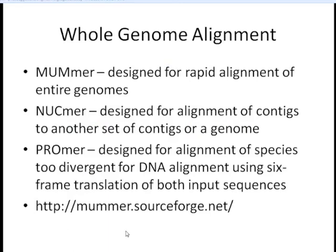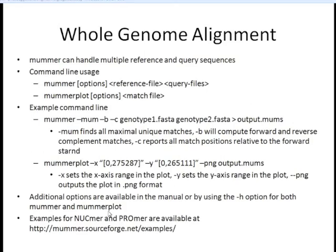Another specialized scenario is aligning a whole genome to another whole genome. For this, we have three possible programs within the MUMmer suite. MUMmer itself is designed for rapid alignment of entire genomes. NUCmer is designed for alignment of contigs to another set of contigs or a whole genome. PROmer aligns at the protein level using six-frame translation, ideal for aligning whole genomes of two species too diverged for DNA alignment. This is available for download at the URL shown, where there's also a manual and examples.